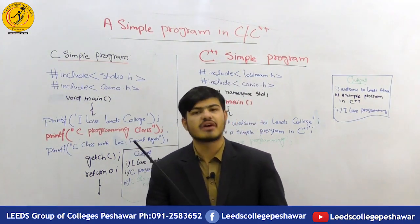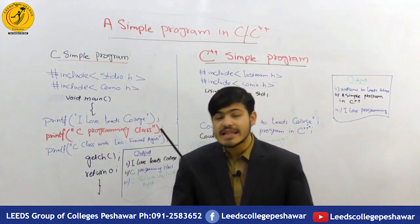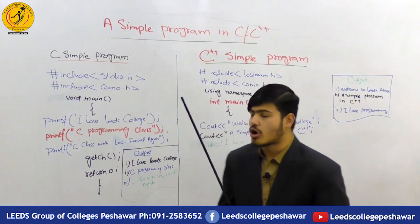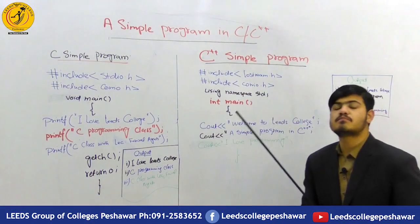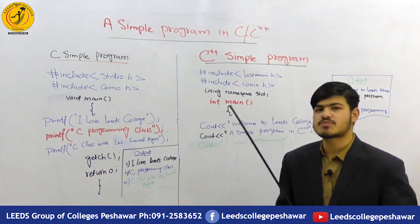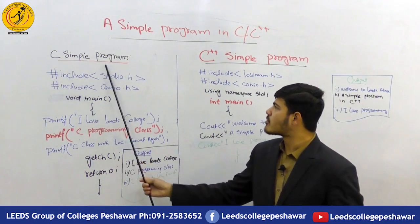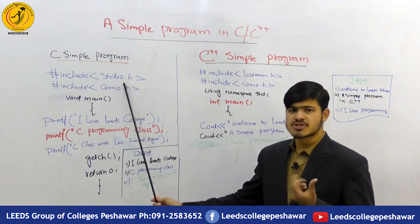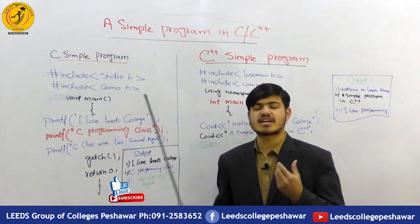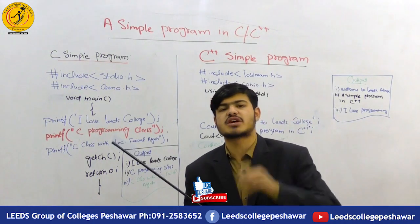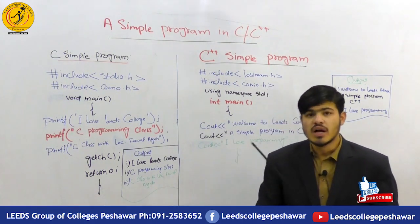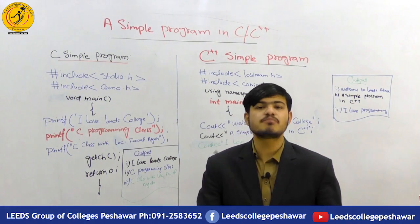We will use a structure, make a statement, or use a function. In C and C++ we can design a program. For a simple program in C, we have hash include stdio.h — standard input and output — and conio.h. Next we have void main, and then printf. The output is displayed using printf because C is a functional language and C++ is an operator language.